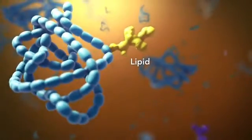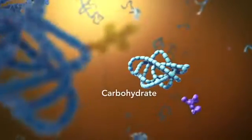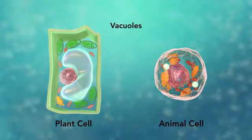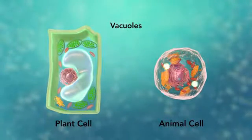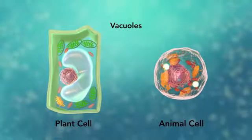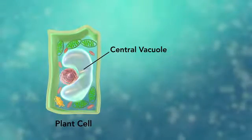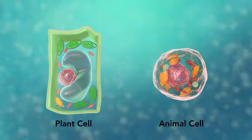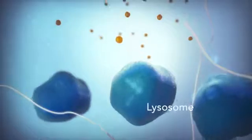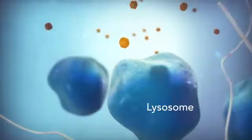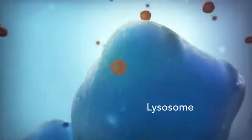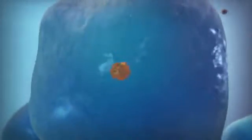Vacuoles are sac-like structures that store different materials. Here in this plant cell, the central vacuole stores water. Going back to the animal cell, you will see an organelle called a lysosome. Lysosomes are the garbage collectors that take in damaged or worn-out cell parts. They are filled with enzymes that break down this cellular debris.